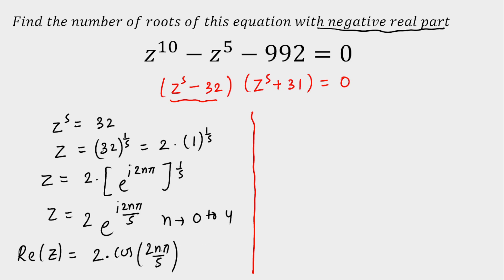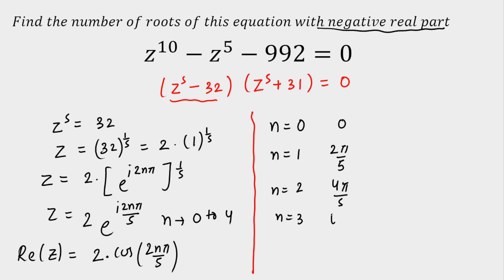So all we have to check is whether the angle 2nπ/5 falls in the second or third quadrant. For n=0, the angle is 0 — rejected. For n=1, the angle is 2π/5. For n=2, the angle is 4π/5. For n=3, the angle is 6π/5. For n=4, the angle is 8π/5.